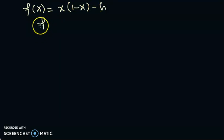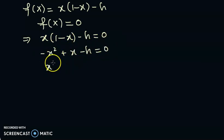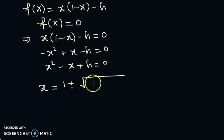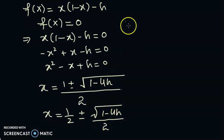To find the equilibrium solutions, we set f(x) = 0, which gives x(1 - x) - h = 0. This is a simple quadratic equation. Expanding and applying the quadratic formula gives the two solutions: x = (1 ± √(1 - 4h)) / 2, which can also be written as 1/2 ± √(1 - 4h) / 2.